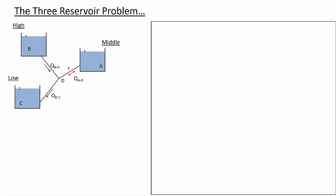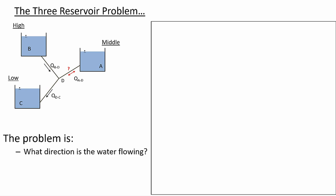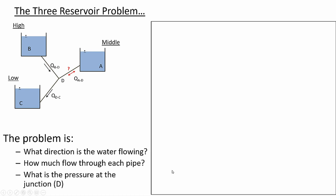We're going to go through an iteration process today and after a couple of iterations we'll converge on a solution. The problem we're trying to solve is: what direction is the water flowing, at what flow rate through each pipe, and just for fun we can also calculate the pressure at junction D if we know its elevation. We'll work through this using the template file on Blackboard.